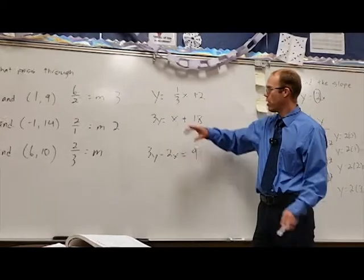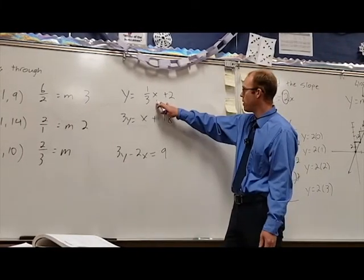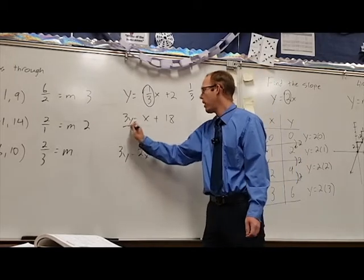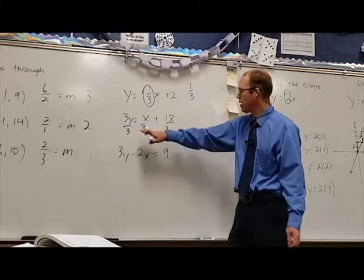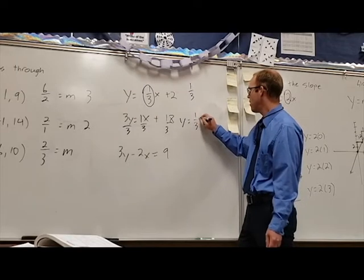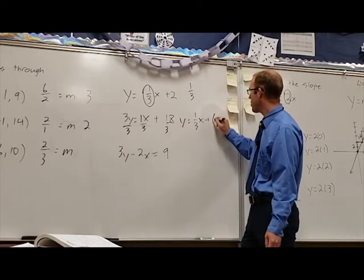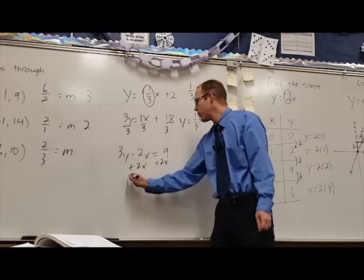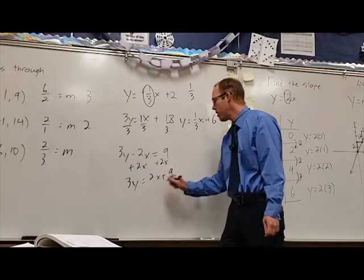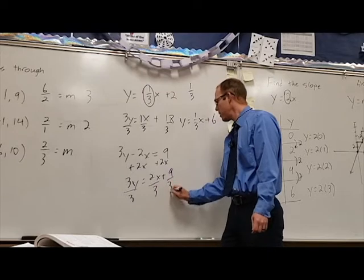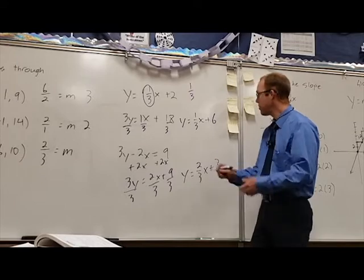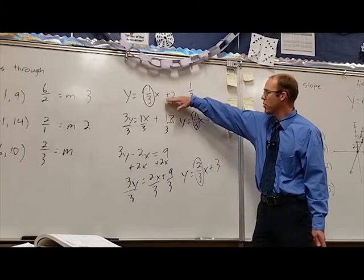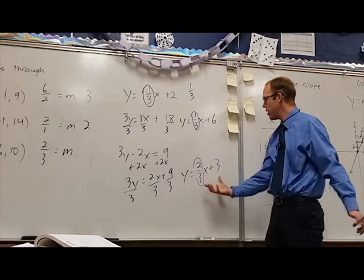In this third type of example, we take a look at equations. Remember, it's the slope we're looking at, and the first equation is in slope-intercept form, so the slope is one-third. The second equation is not in the right form, so let's solve for y by dividing by three — we find y equals one-third x plus six. For the third, we add two x to both sides to get three y equals two x plus nine, then divide by three to get y equals two-thirds x plus three. So the slopes are one-third, one-third, and two-thirds — the first two have the same slope, so they are parallel. The third is not.